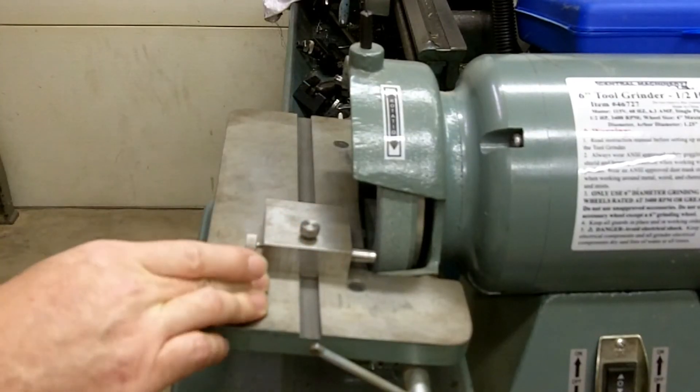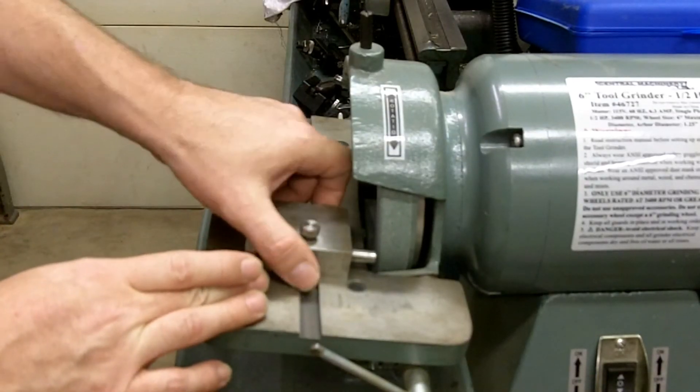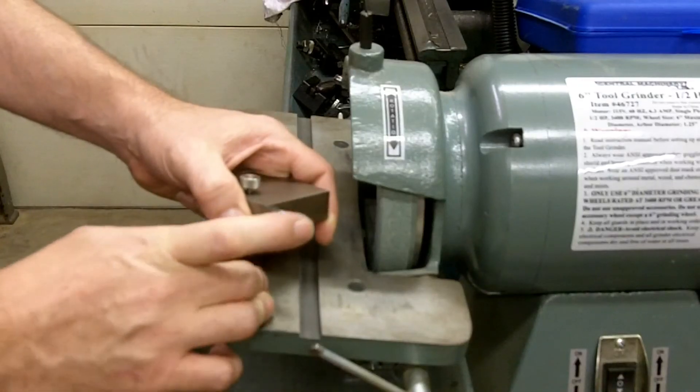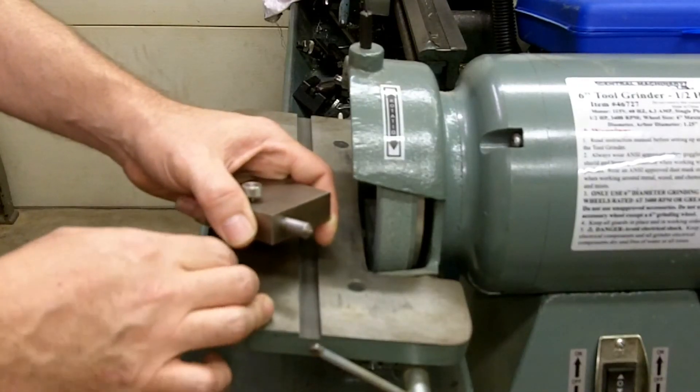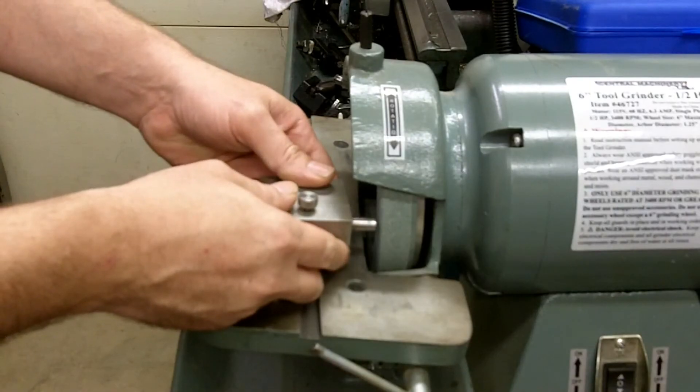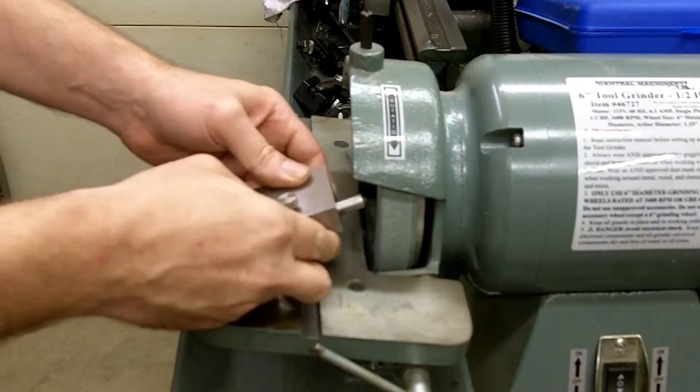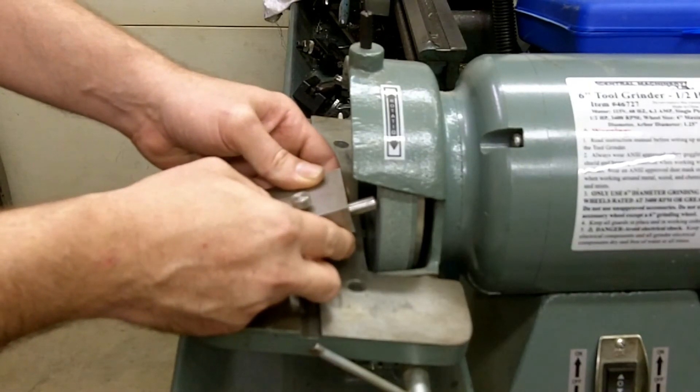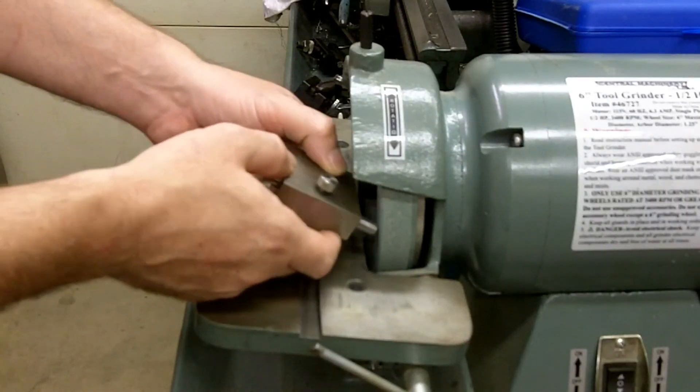Now one thing I do want to note is when you are dressing wheels, especially with a diamond pointed dresser, you do not want to come straight into the wheel, you do not want to come in with it angled upwards—you want to angle downwards. That's the proper way to dress the wheel.